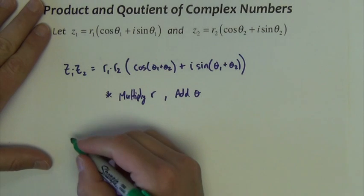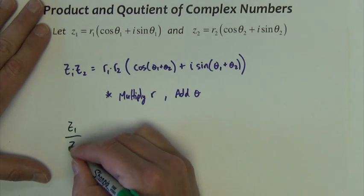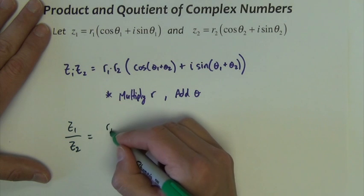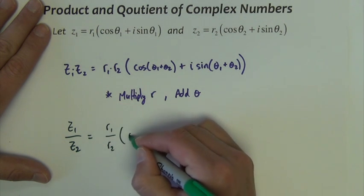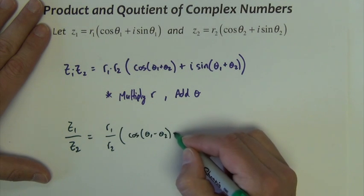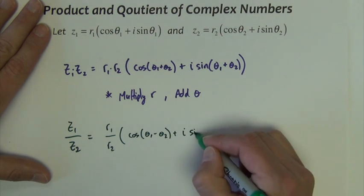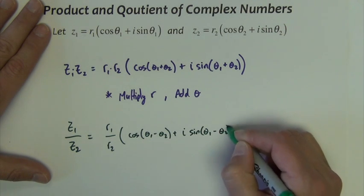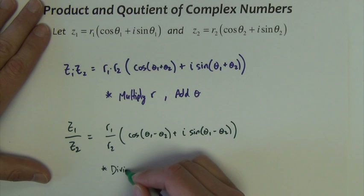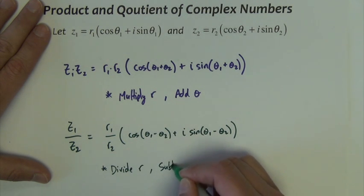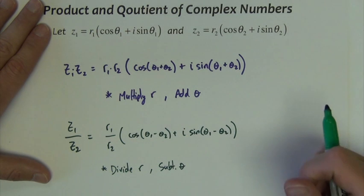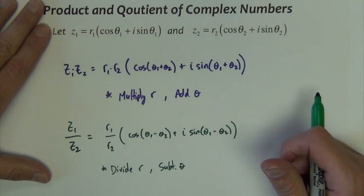If we want to divide two complex numbers, Z1 divided by Z2, we do just the exact opposite. We divide the R values, and then instead of adding the thetas, we subtract the thetas. Very similar — we divide the R's and subtract the thetas.